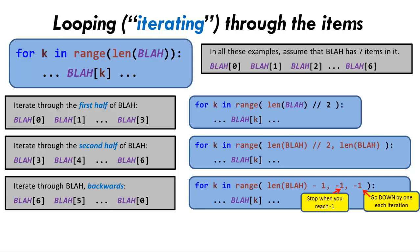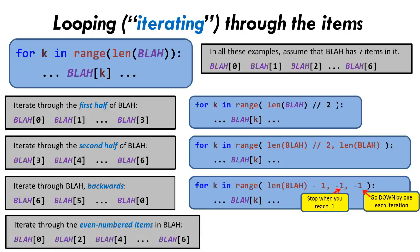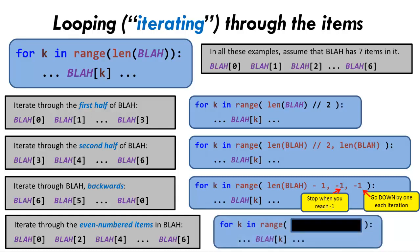One last example of such variations. Suppose that you want to iterate through the even-numbered items in the sequence — that is, through items 0, 2, 4, 6, etc. What range expression would you use to iterate through the even-numbered items in the sequence? Pause the video briefly to think through your answer. This time we need a range expression that goes up by two each time through the loop, as shown in this three-argument range expression here. Again, there are other ways to solve this problem, but this is perhaps the simplest solution.